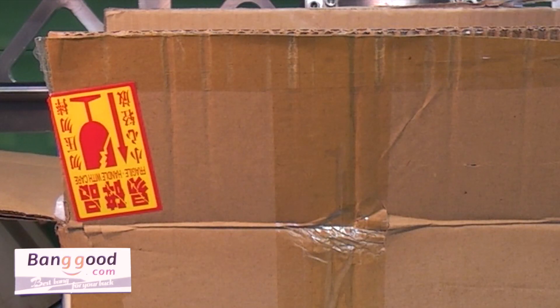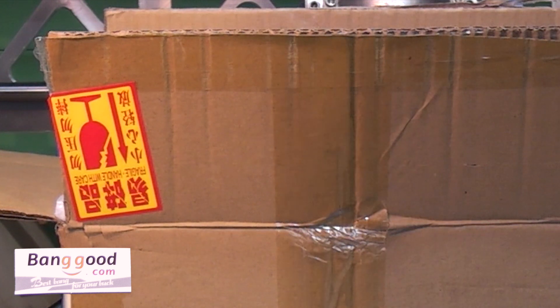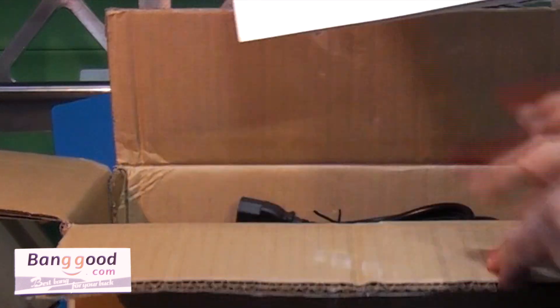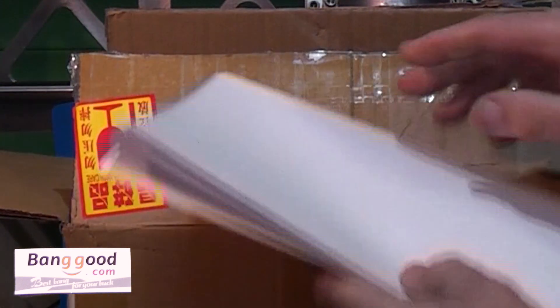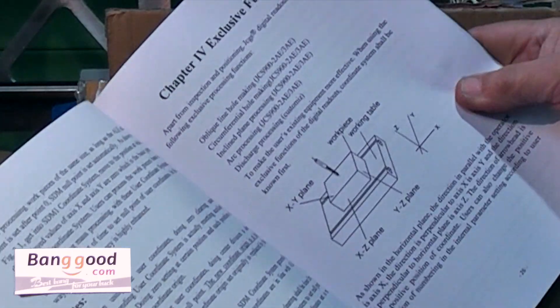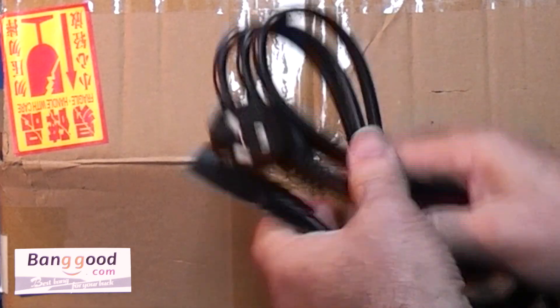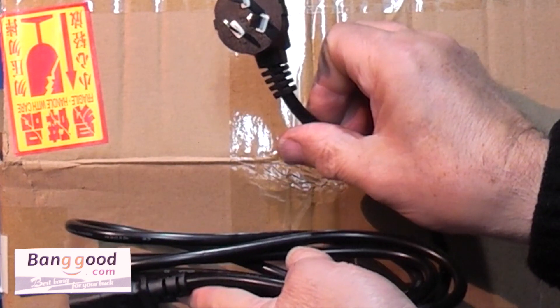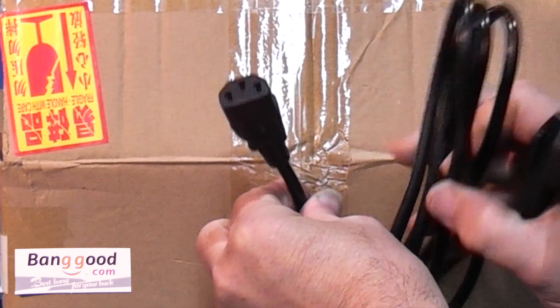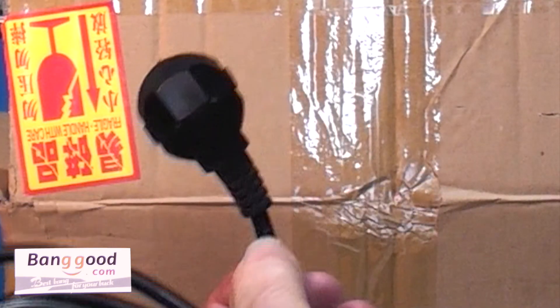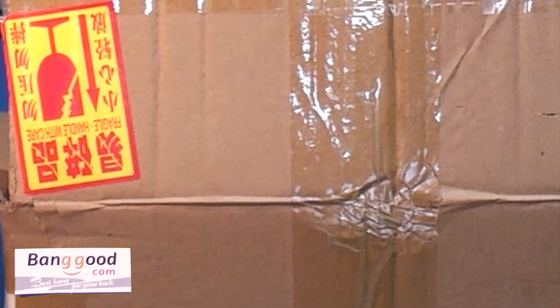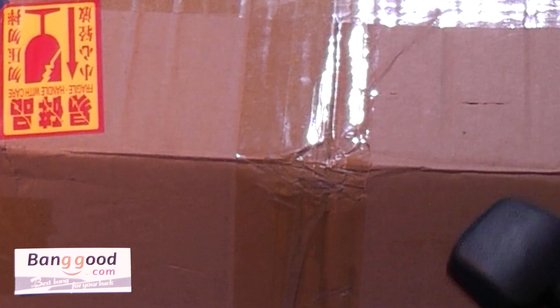Well today I've had some parcels arrive from Banggood. First of all we've got the instructions in English for the digital readouts. A power lead - now this power lead is not a UK type power lead. That socket's okay but this socket is non-UK. So I found a lead I can use instead of this.